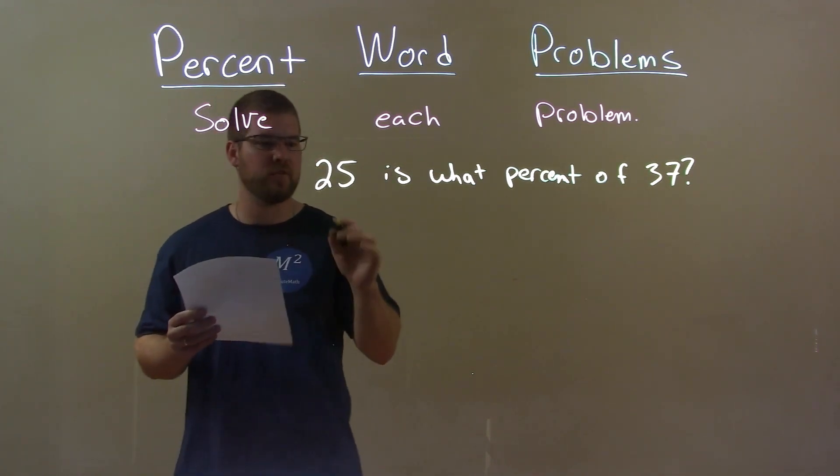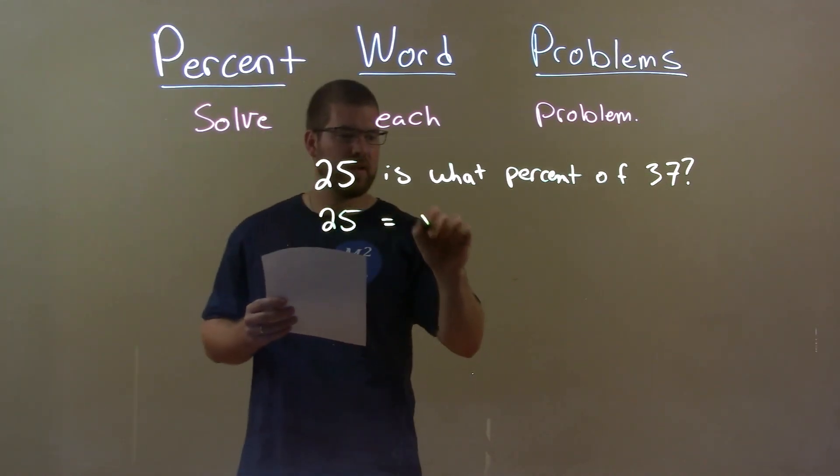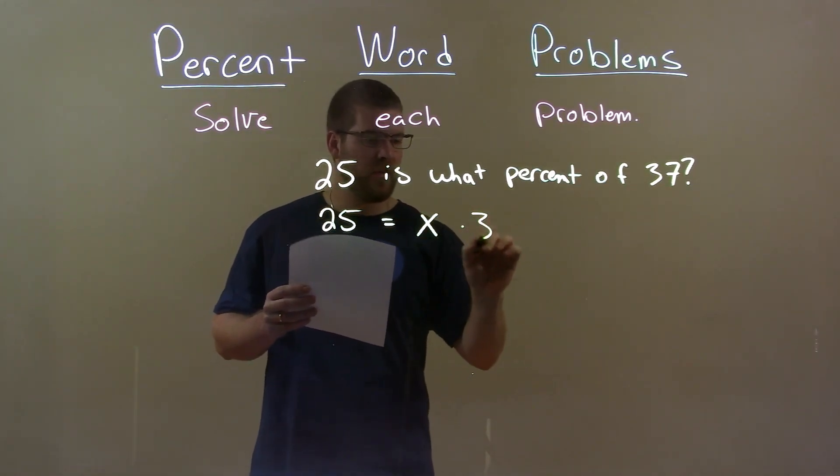Alright, let's write this as an equation. 25 equals, what percent X, of, multiplied by 37.